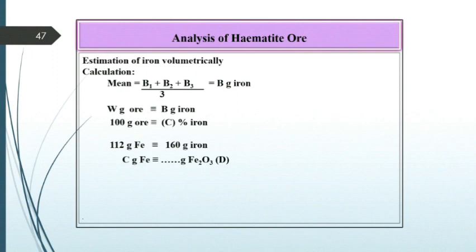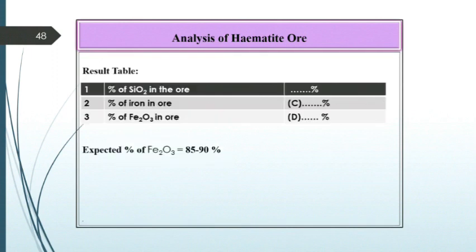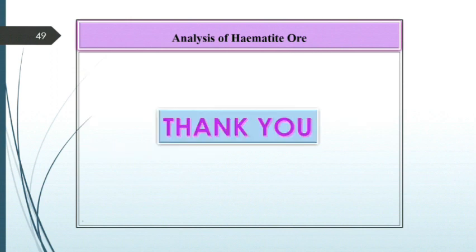Then finally, result table: percentage of SiO2 in the ore, percentage of iron in ore as C percent, percentage of Fe2O3 in ore as D percent. Expected percentage of Fe2O3 is 85 to 90 percent.